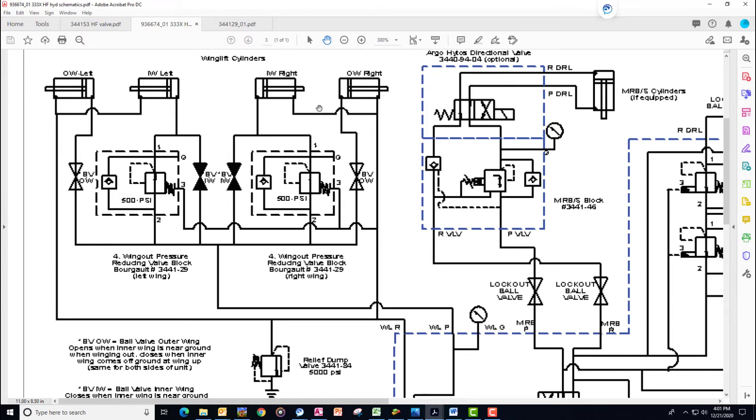On the return cycle, it's a fairly simple system. We're going to now pressure up the rod end. So because the ball valve to the outer wing is open, that outer wing is going to fold up first. And we are sitting with the same pressure on the inner wing, but it is heavier because it has the added weight of the outer wing. So it will just by nature go in the proper direction.